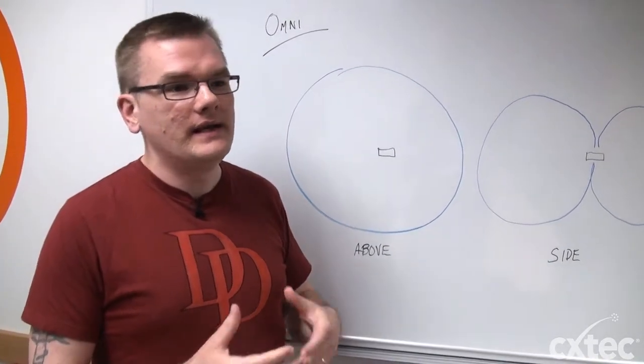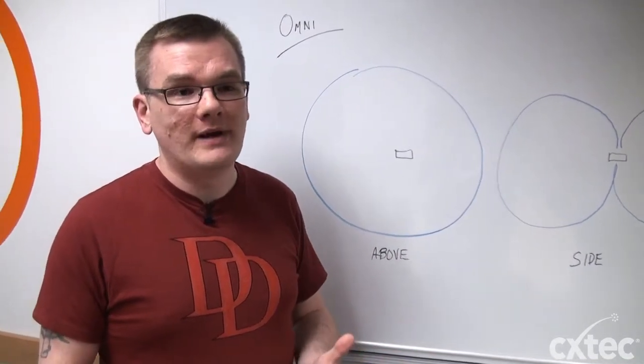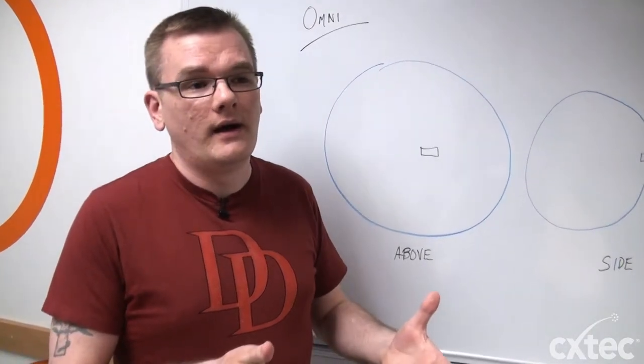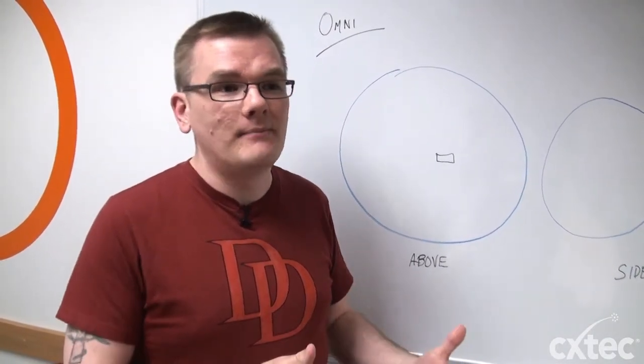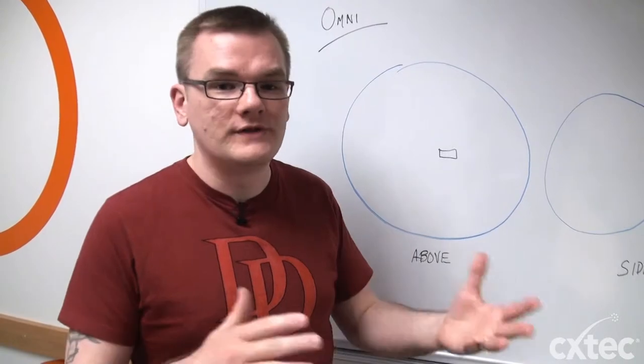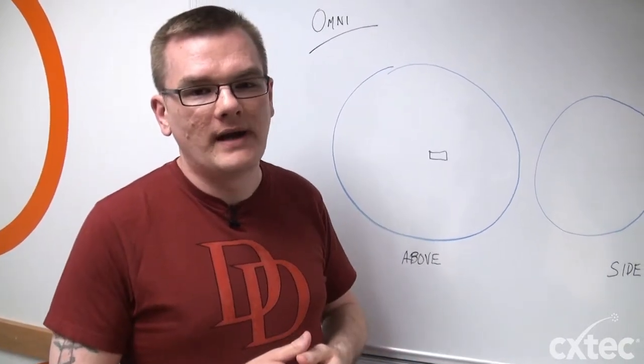I get a lot of questions about this, even just from natural conversation about placement of antennas. Where does it make sense? Where does it not make sense? How much bleed through in walls and ceilings? We'll talk a little bit about that today.